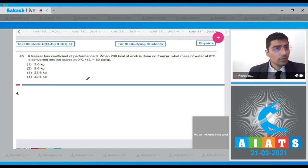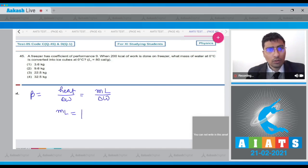The students, the coefficient of performance is given as heat by work done. Now the heat in this case will be mass multiplied by the latent heat divided by ΔW. So mL will equal β times ΔW, or we can write that m equals β times ΔW by L.